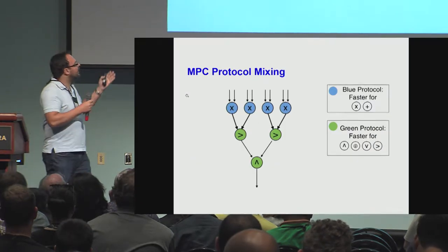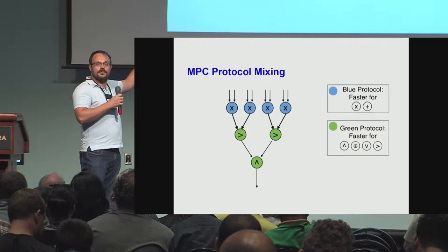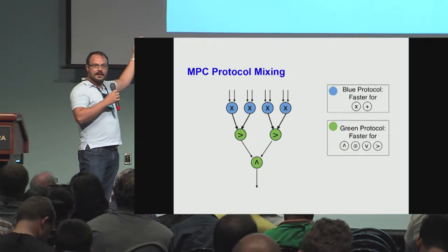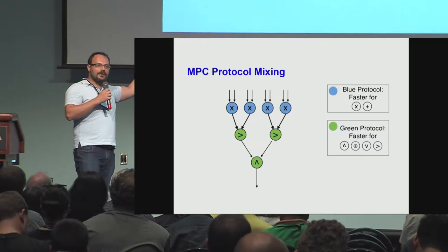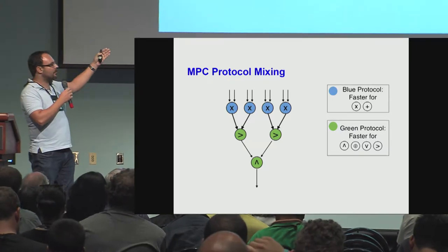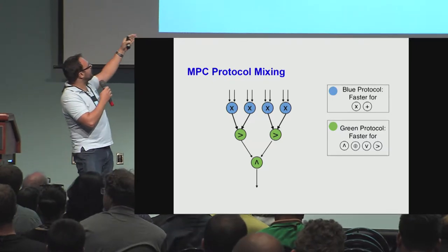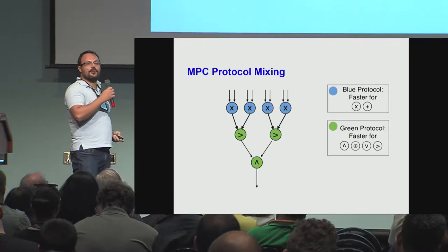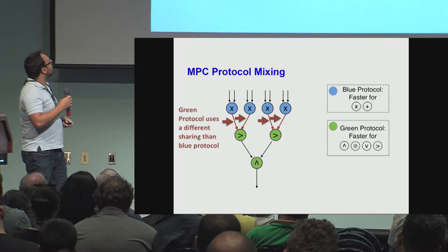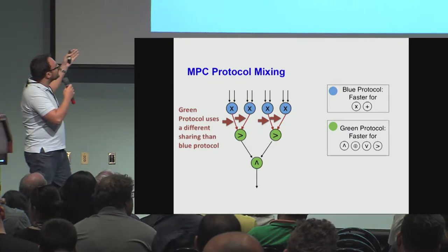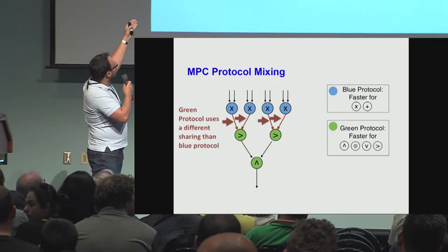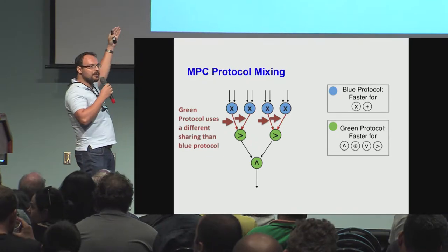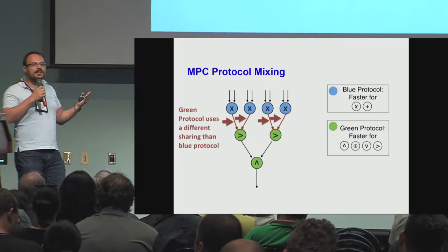What's the general idea? We know that different types of operations, like additions and multiplications or Boolean gates, are better, faster, more efficiently computed by different protocols. For example, we know that Garbled circuits are better for computing Boolean operations, and BGW is better for computing arithmetic operations. But the problem is that these protocols somehow process a different state.